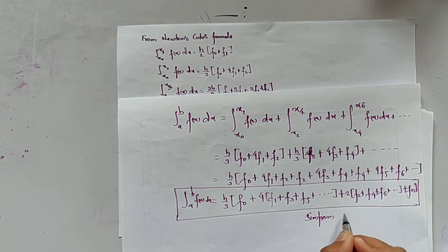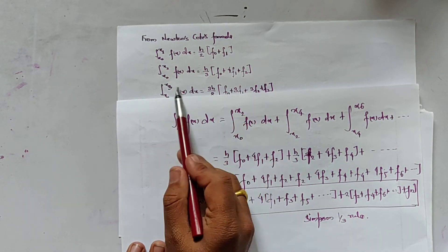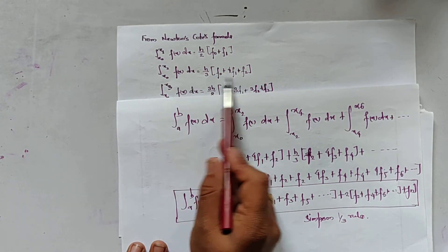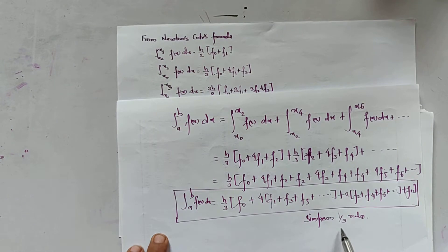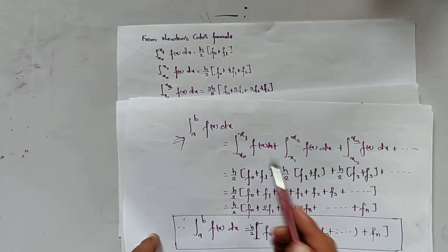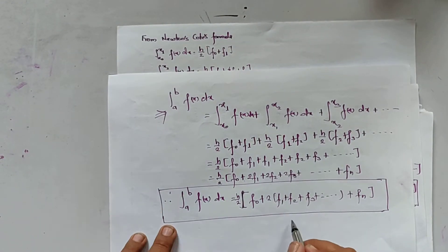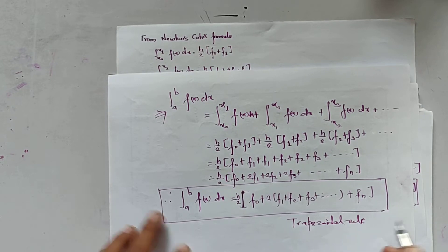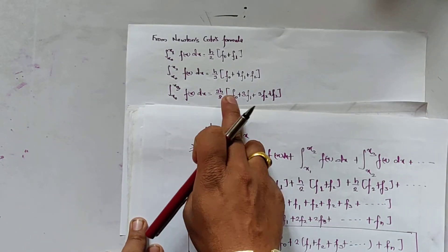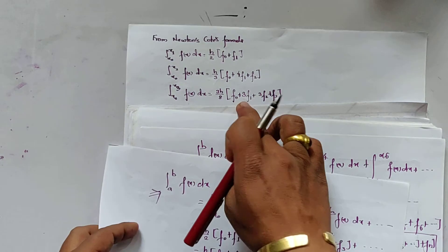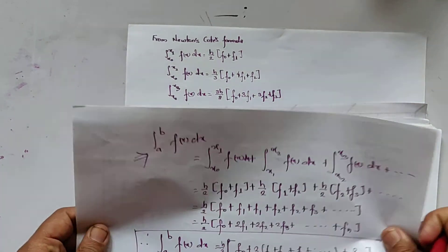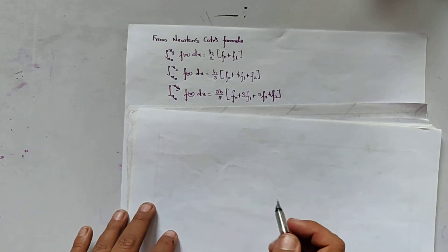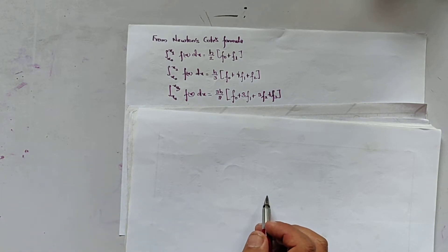Simpson's 1/3 rule was generated using the second Newton-Cotes formula, and the trapezoidal rule was generated using the first Newton-Cotes formula. The remaining third Newton-Cotes formula is used to generate Simpson's 3/8 rule.